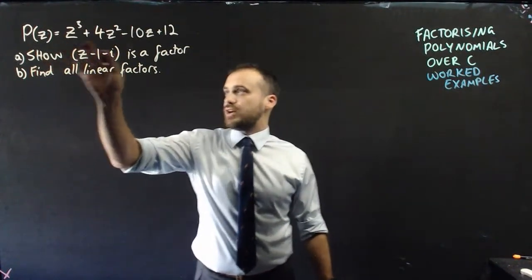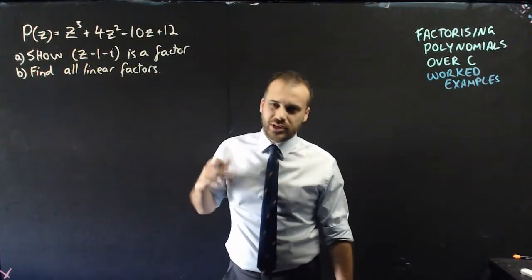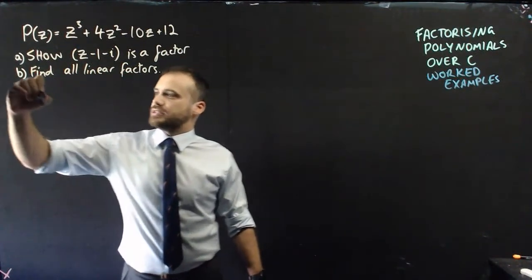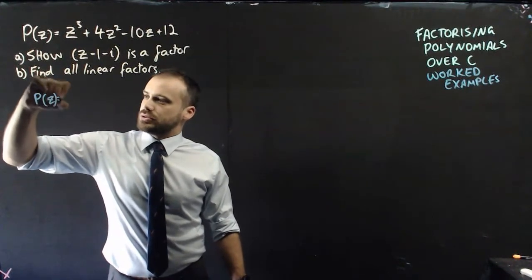Alright, so we have a function here. We first need to show that this is a factor, and then we're going to find all the other linear factors after that. Now, we know it's going to be a factor if P(z) equals 0.